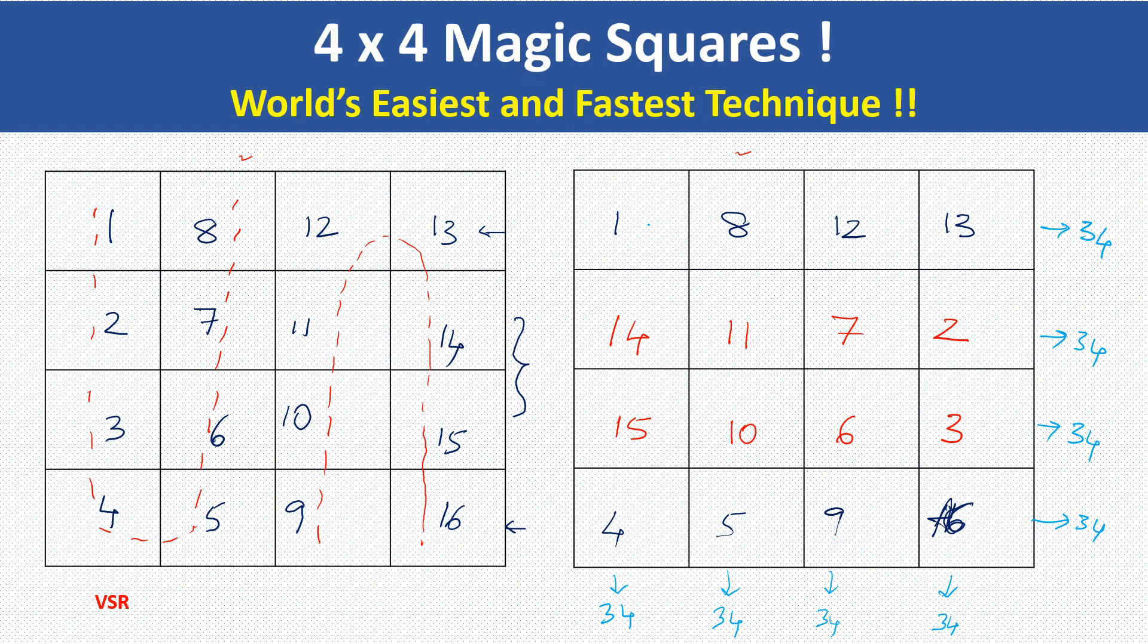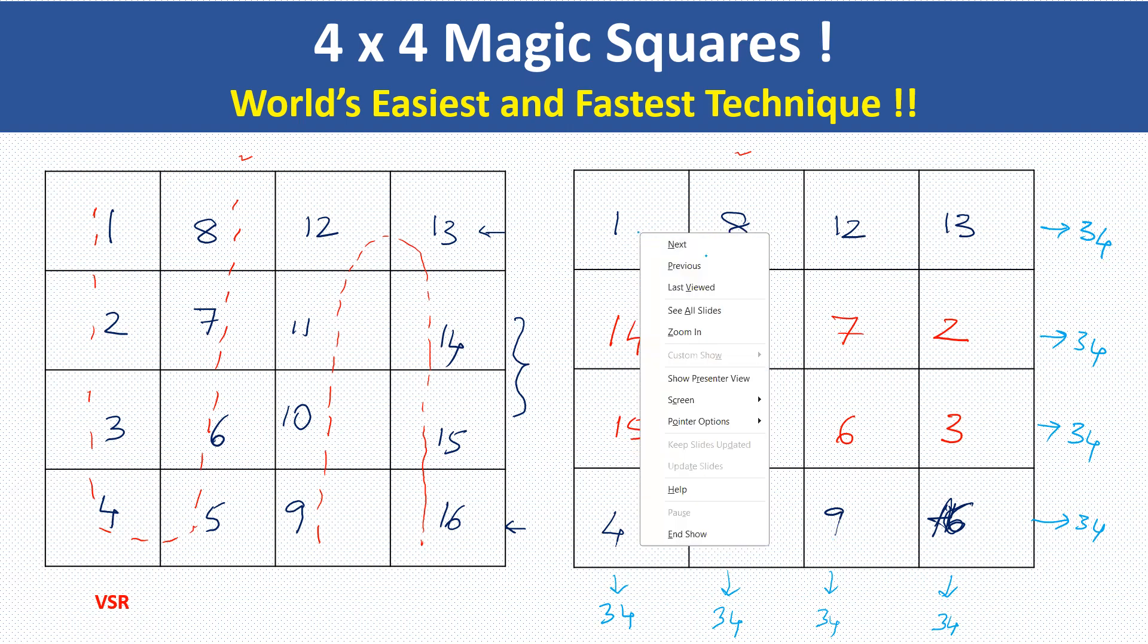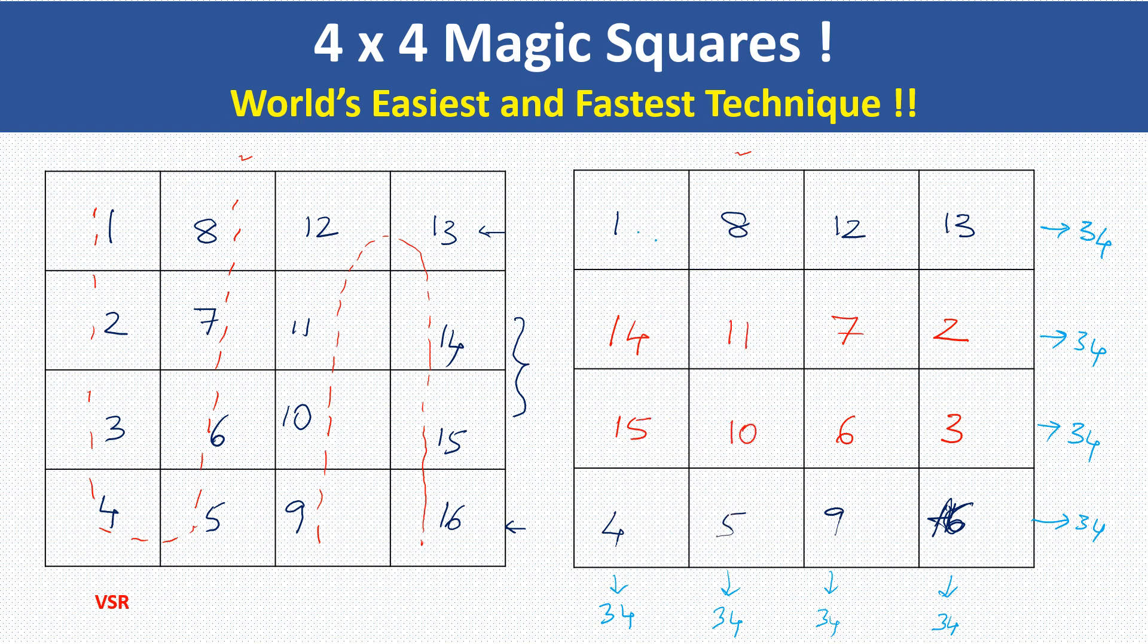But that is not the end of this. You just take this. 1 plus 8 plus 14 plus 11. Just add this. Yes, this is 34. You see the beauty, 12, 13, 7, 2, add them. It is 34 and 5, 10, 4 and 15 is nothing but 34 and 6, 3, 16, 9 is nothing but 34.